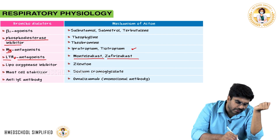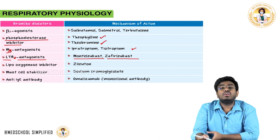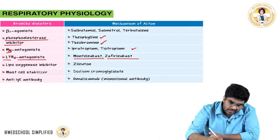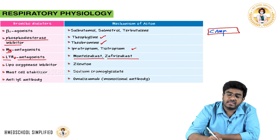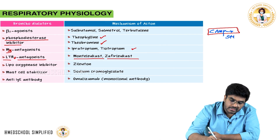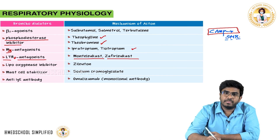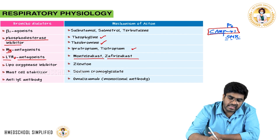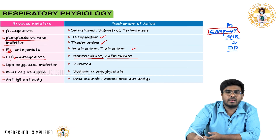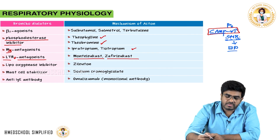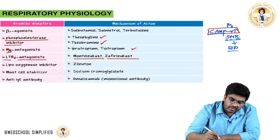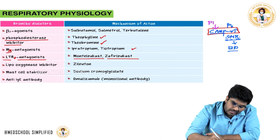Phosphodiesterase (PDE) inhibitors like theophylline and theobromine are also used. In bronchial smooth muscle, cAMP is responsible for smooth muscle relaxation, which leads to bronchodilation. When beta-2 receptors are stimulated, intracellular cAMP increases, causing smooth muscle relaxation and bronchodilation. However, phosphodiesterases decrease cAMP levels, leading to smooth muscle contraction and bronchoconstriction.